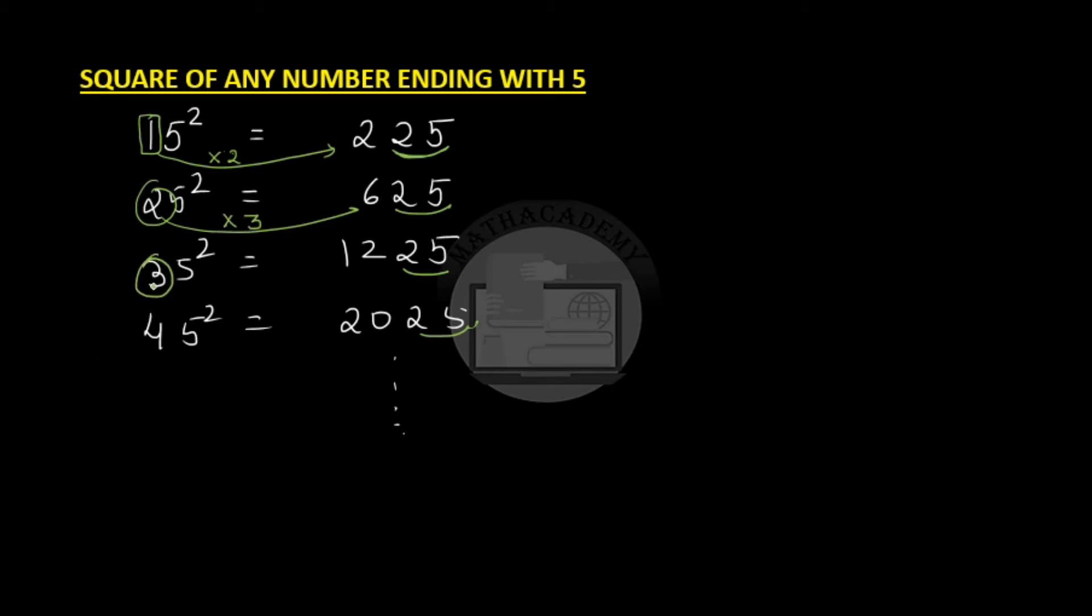For 35 square, look at this 3. 3 multiplied by 1 more than 3, which is 4, and we get 12.